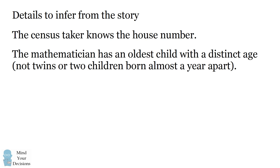The other detail, which is a little more controversial but is generally common sense, is that you have to conclude the mathematician has an oldest child with a distinct age—not twins and not two children born almost a year apart. This comes from the detail where the mathematician says his oldest child loves chocolate chip cookies.